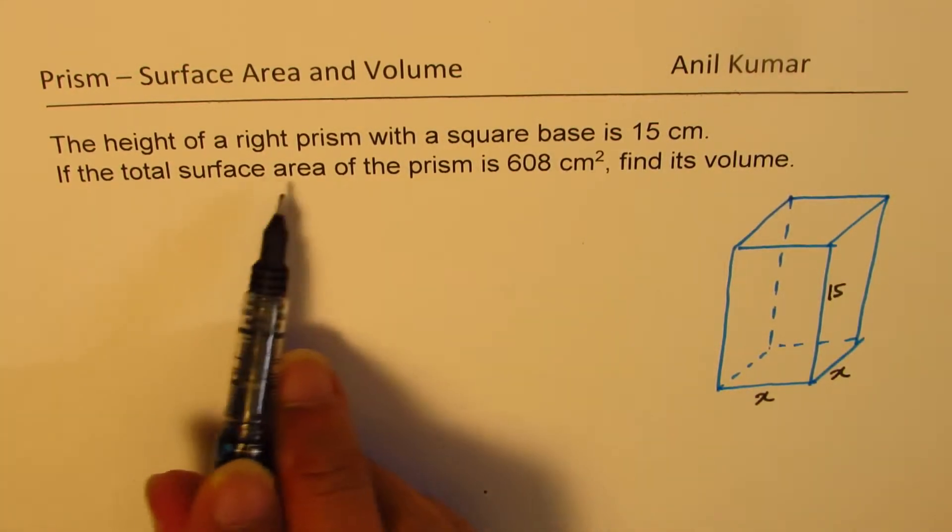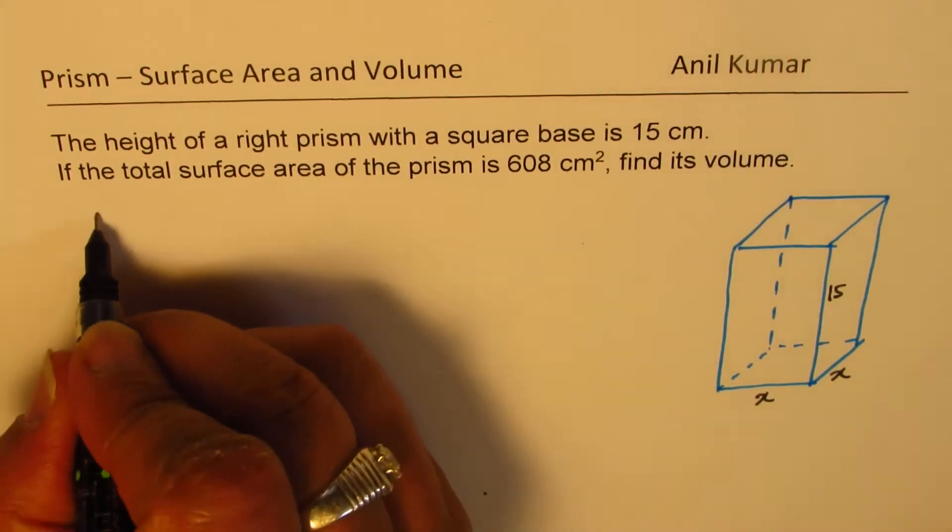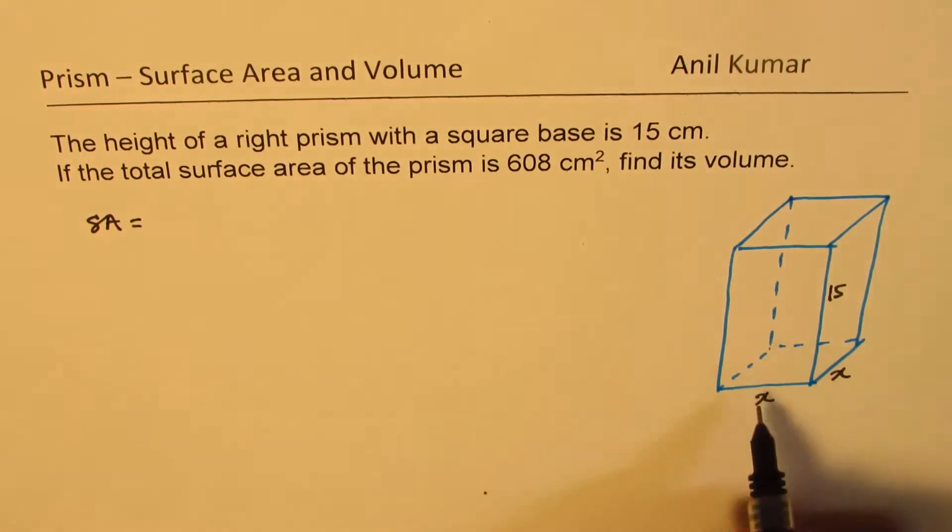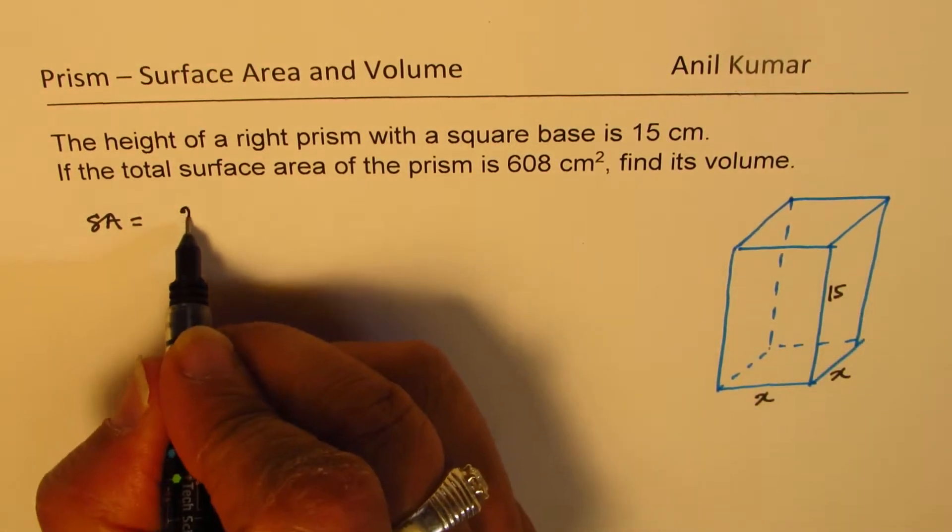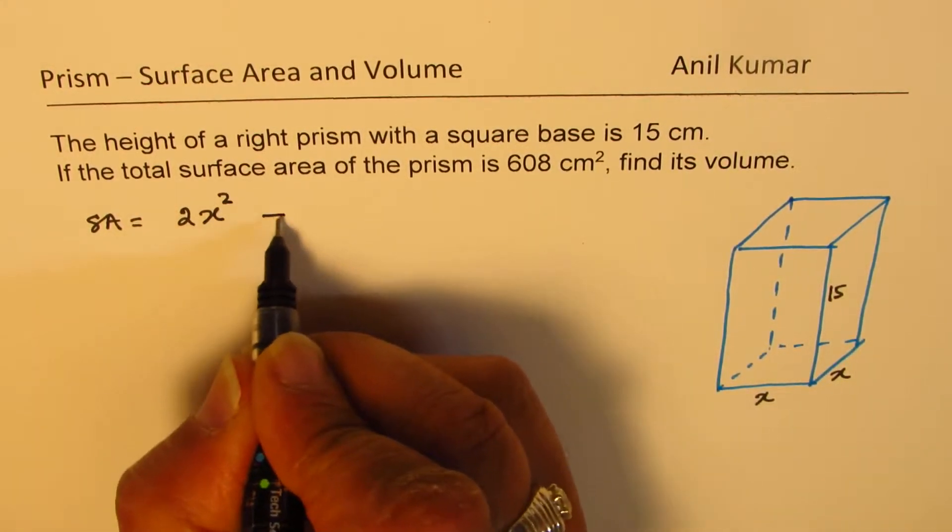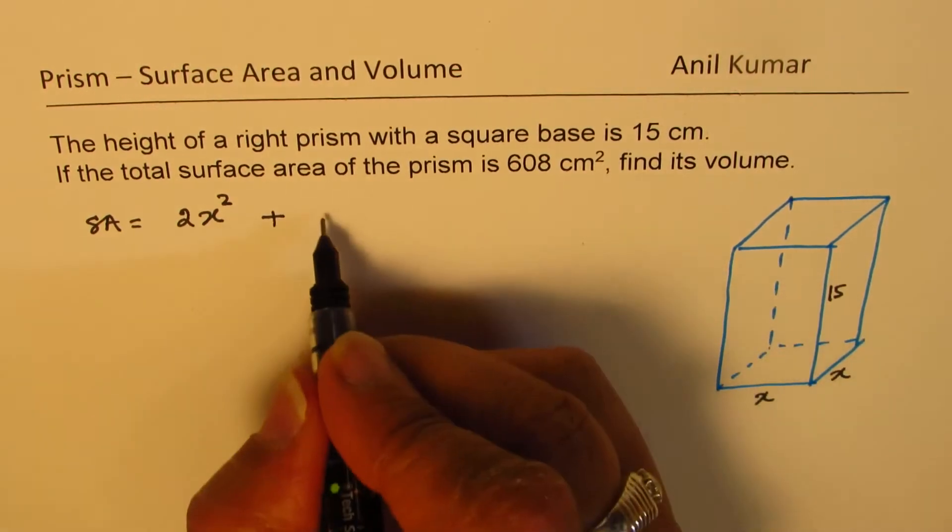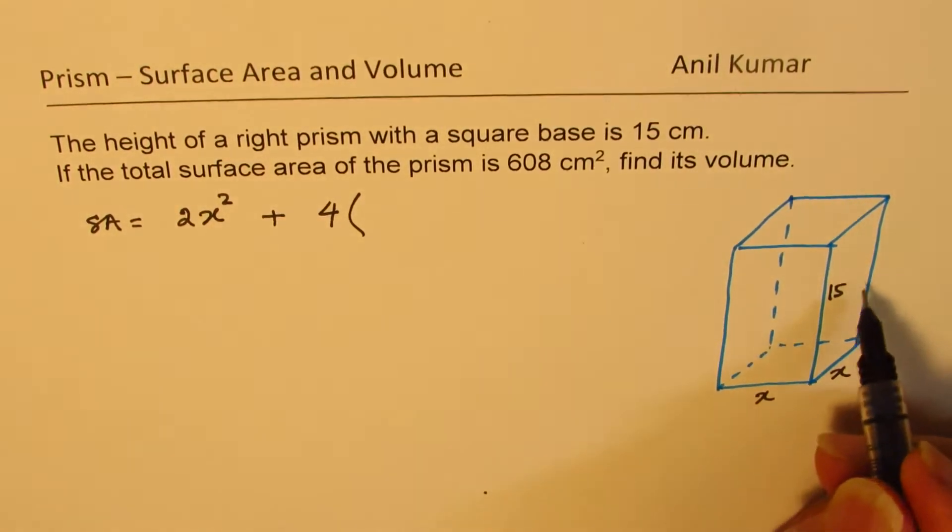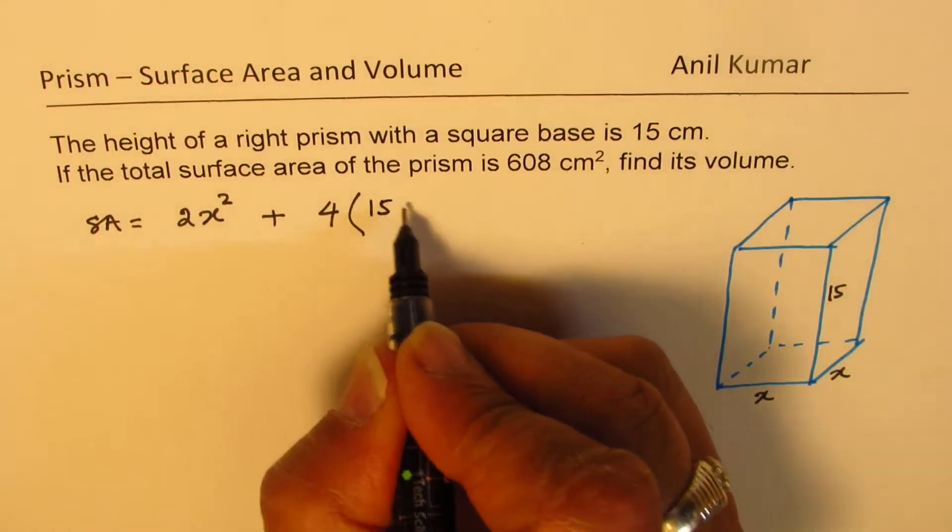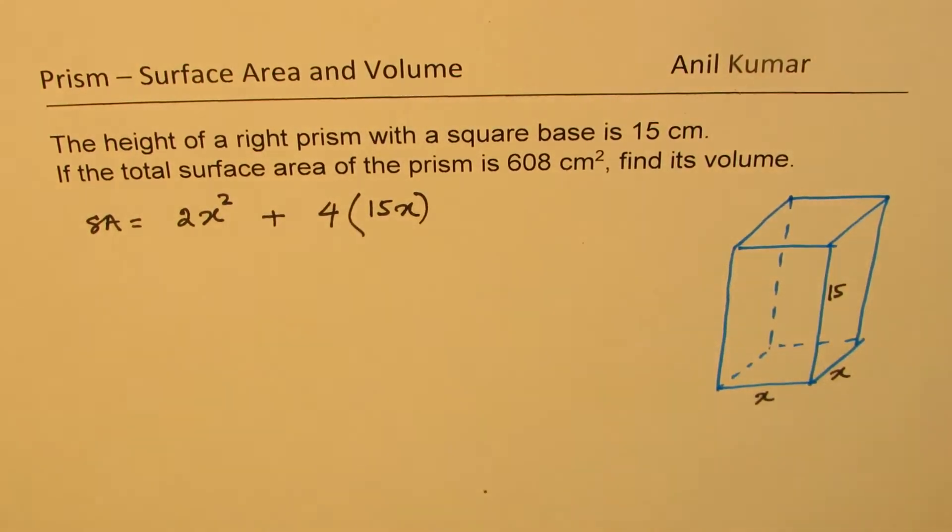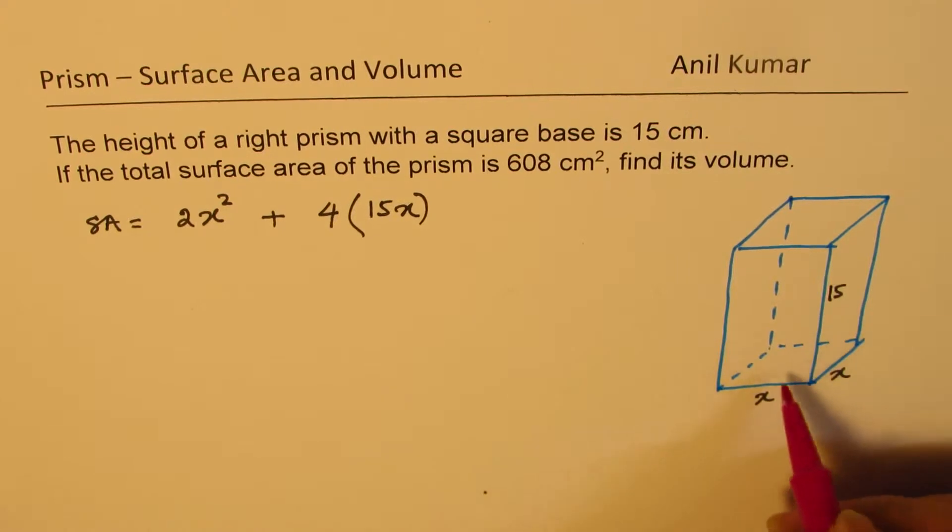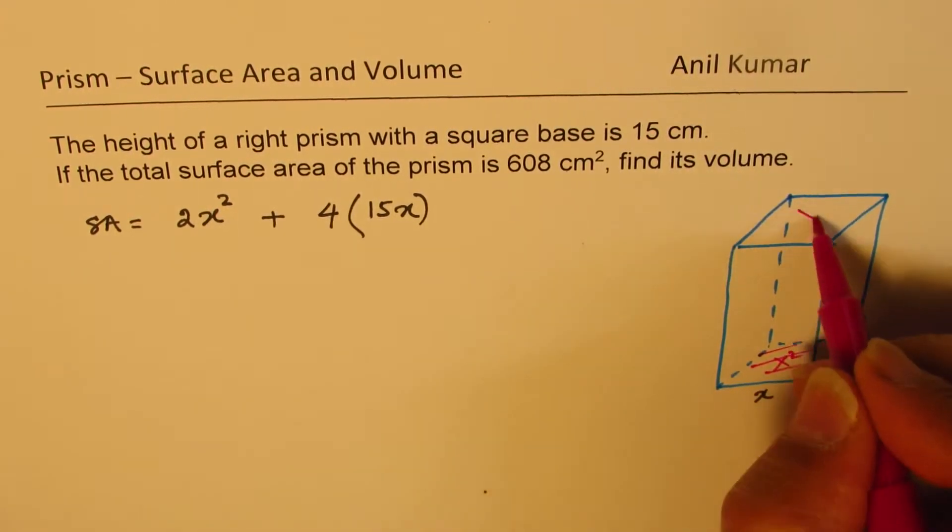Now, total surface area is 608. So surface area is basically area of base and top, which is 2x squared, plus there are four sides. Four times area of each side is 15x. Is that clear? So as you can see from here, the base area is x squared. So this is also x squared.